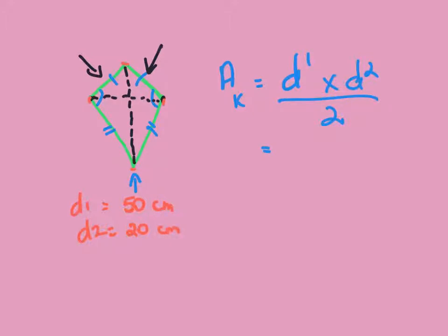So all we're saying here is area of the kite is 50 multiplied by 20 divided by 2. So let me break that right down for you. So that's 50 by 20 which is 1,000.